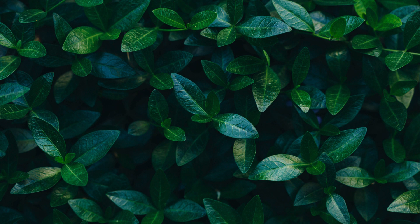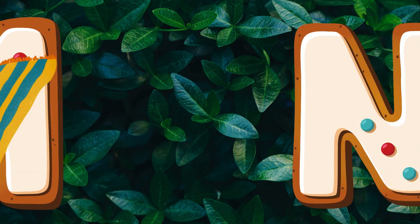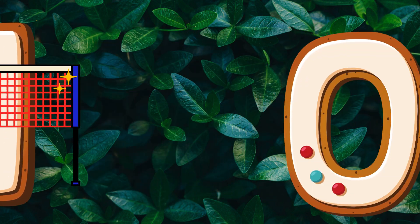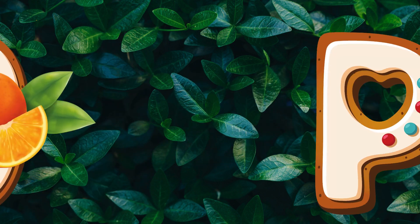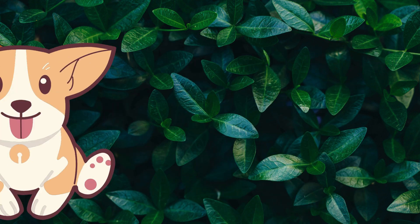M is for Mat. M-M-Mat. N is for Net. N-N-Net. O is for Orange. O-O-Orange. P is for Pet. P-P-Pet.